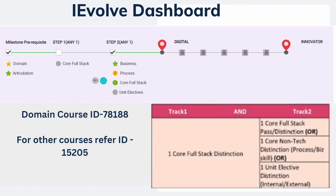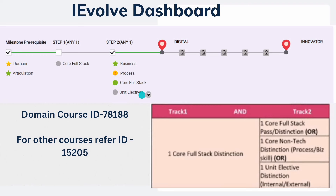If you didn't pass in this one also, not an issue — if you give the T12 exam in the upcoming November cycle and get a star, it means you will become digital directly. So first completed, second completed. I have completed business. Some of you may have completed process or are going to write the unit electives.